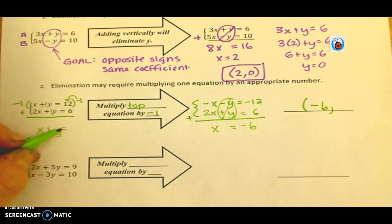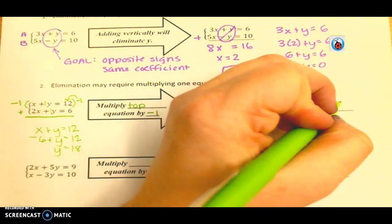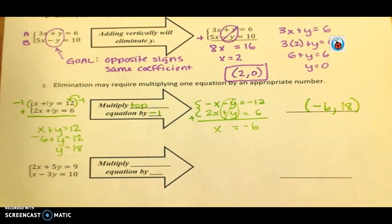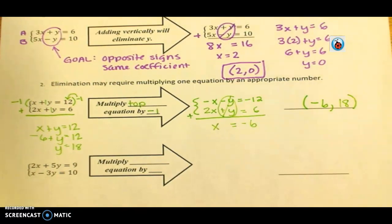So I could go back over here. X plus y equals 12. Negative 6 plus y equals 12. Therefore, y equals 18. Y equals 18. And I could check it. 2 times negative 6 plus 18 gives me 6. Yes, it does. Alright? Okay?